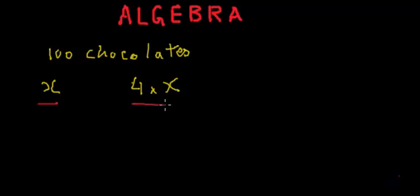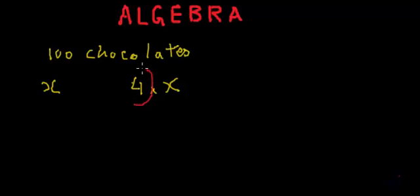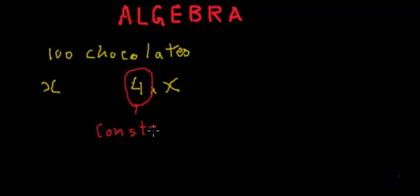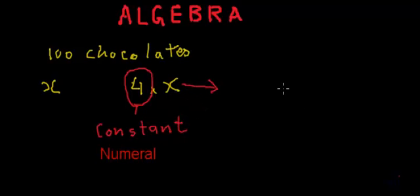These expressions — X and 4X — are called algebraic expressions. Here, 4 is a constant; we know its value, it is 4. The number 4 is called a constant and it is also called a numeral, and X is unknown.